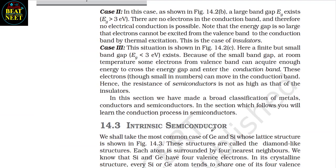Case 2 (figure 14.2b): A large band gap (Eg > 3 eV) exists. There are no electrons in the conduction band and therefore no electrical conduction is possible. The energy gap is so large that electrons cannot be excited from the valence band to the conduction band by thermal excitation. This is the case of insulators.